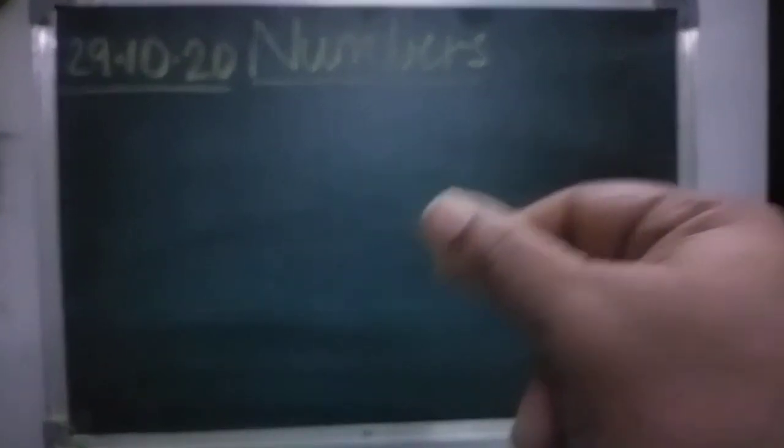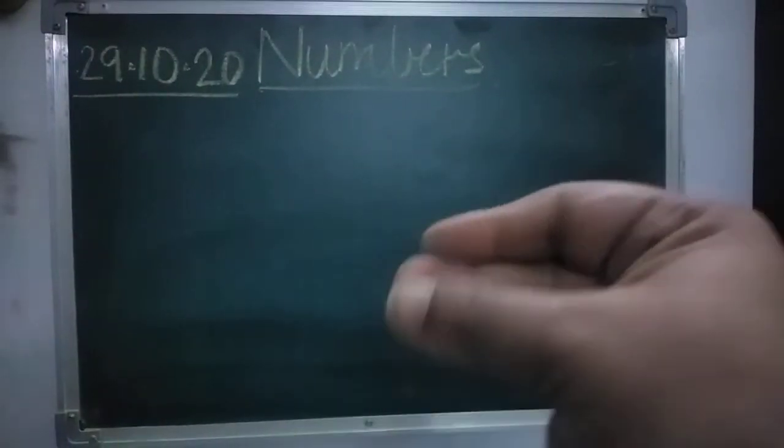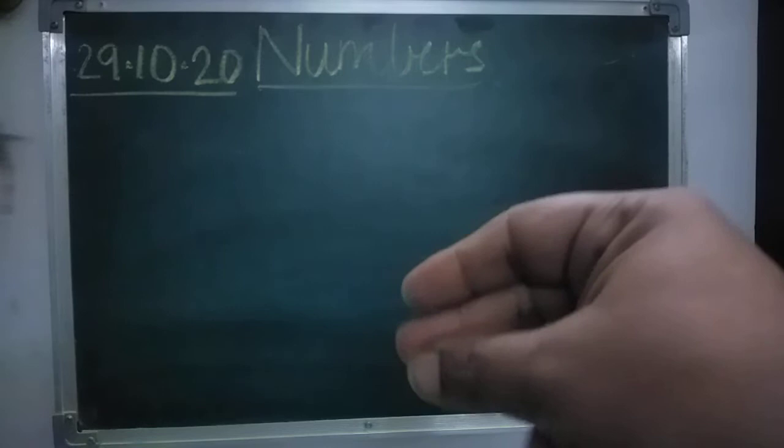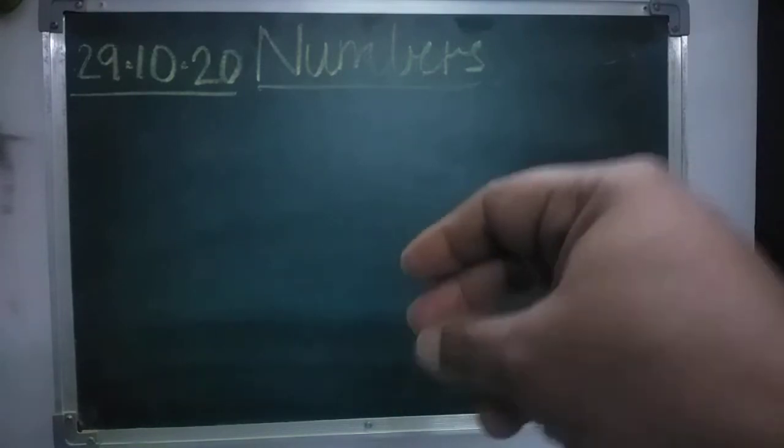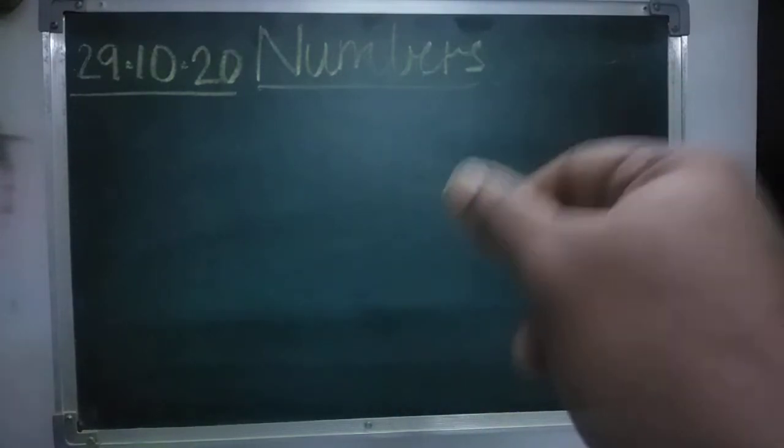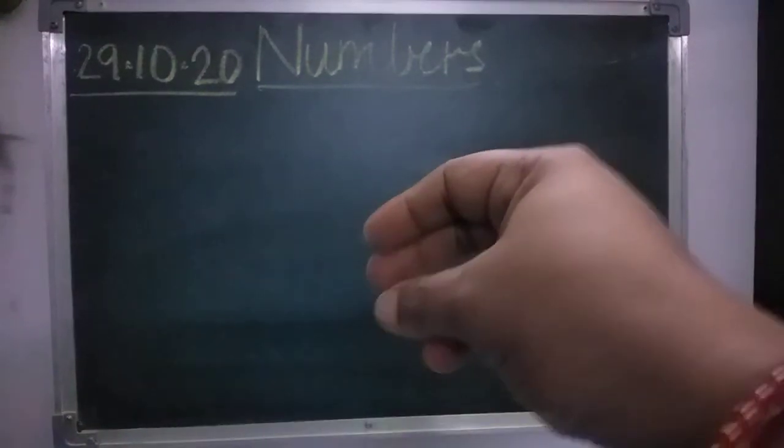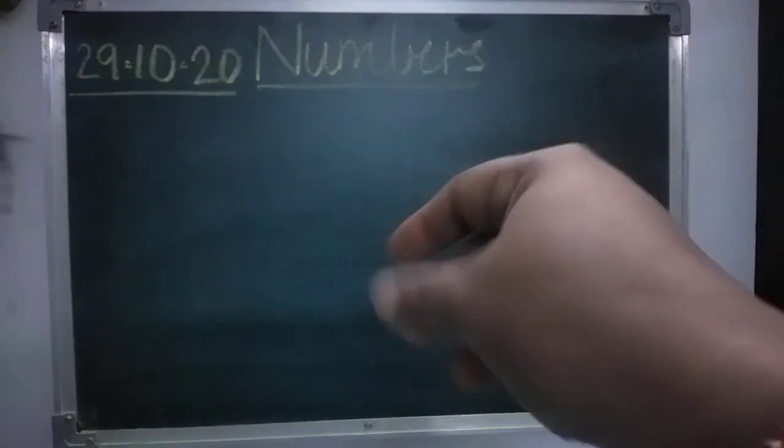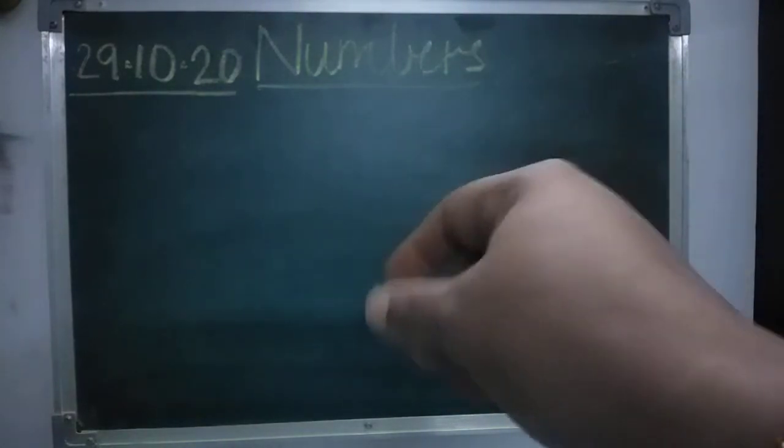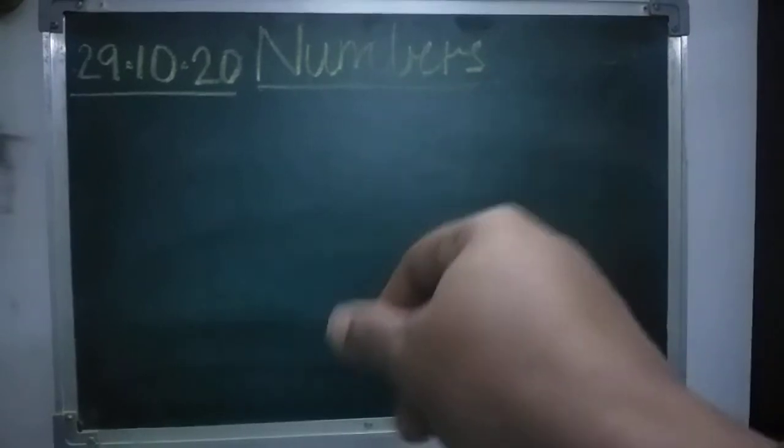One. Meri saath karo. Jaise karo hai? Sab saath mein karo hai. Okay? One, two, three, four, five, six, seven, eight, nine and ten. Shabash! Ek bar fir se chal. One, two, three, four, five, six, seven, eight, nine and ten. Very good. Bravo!